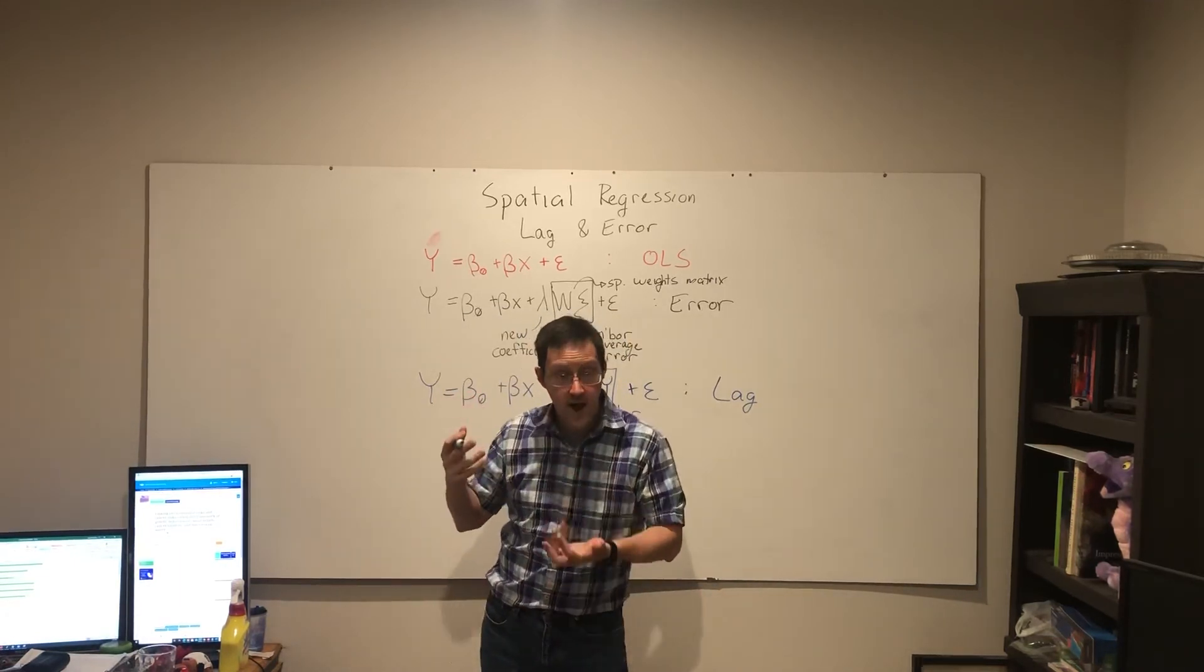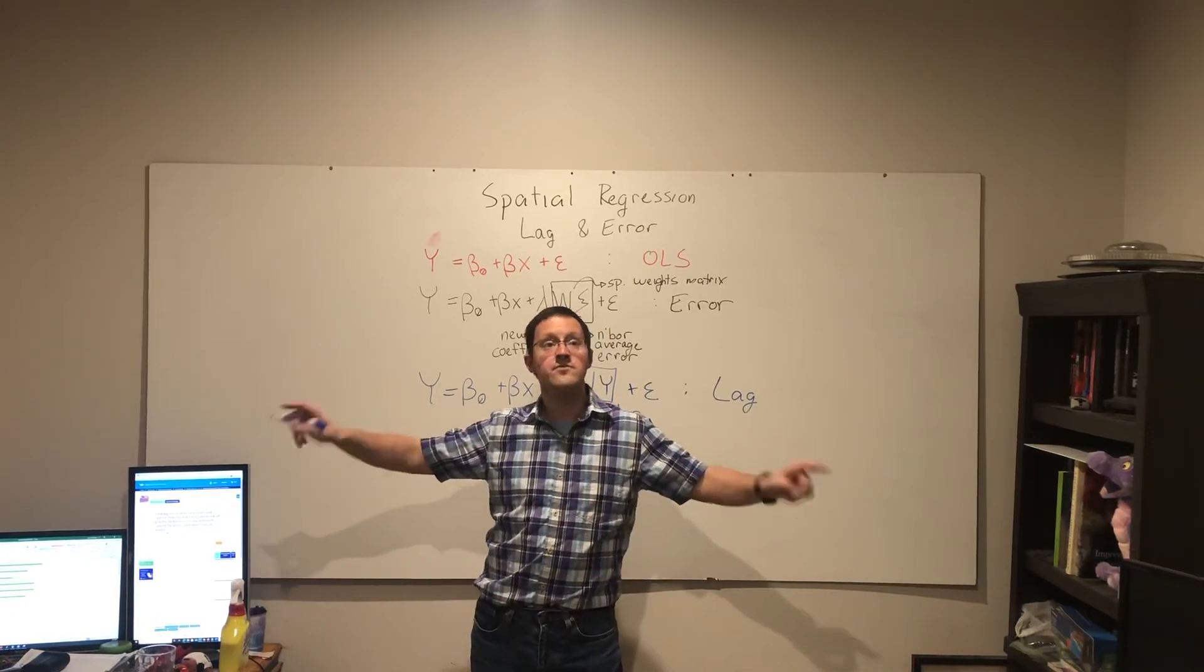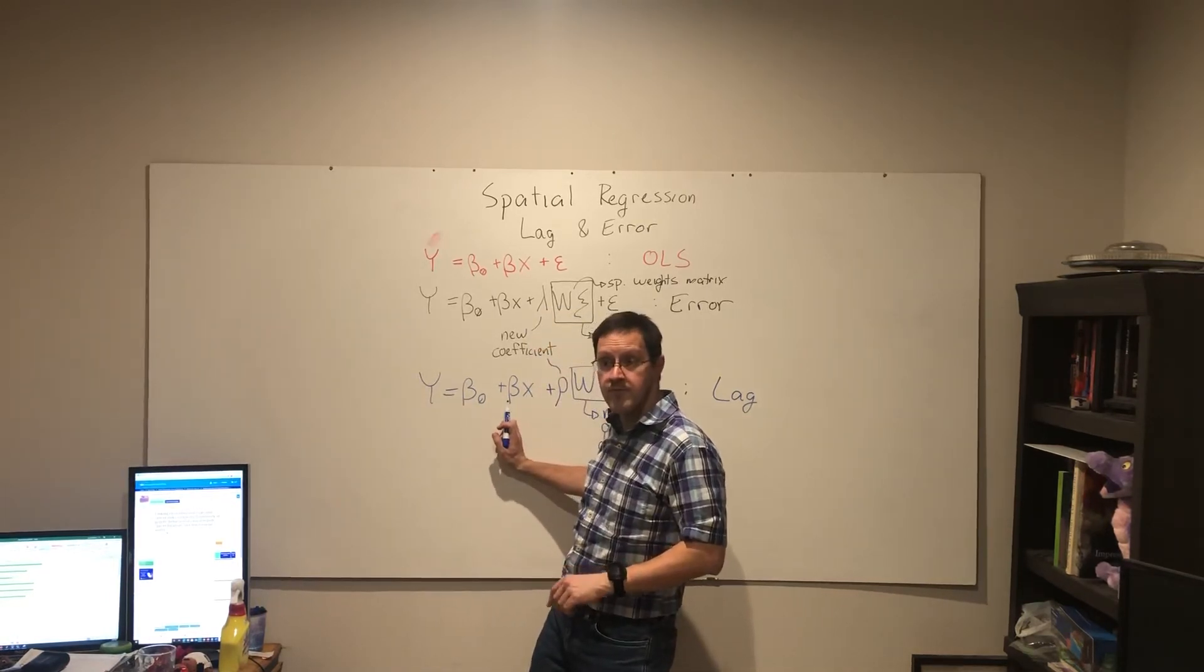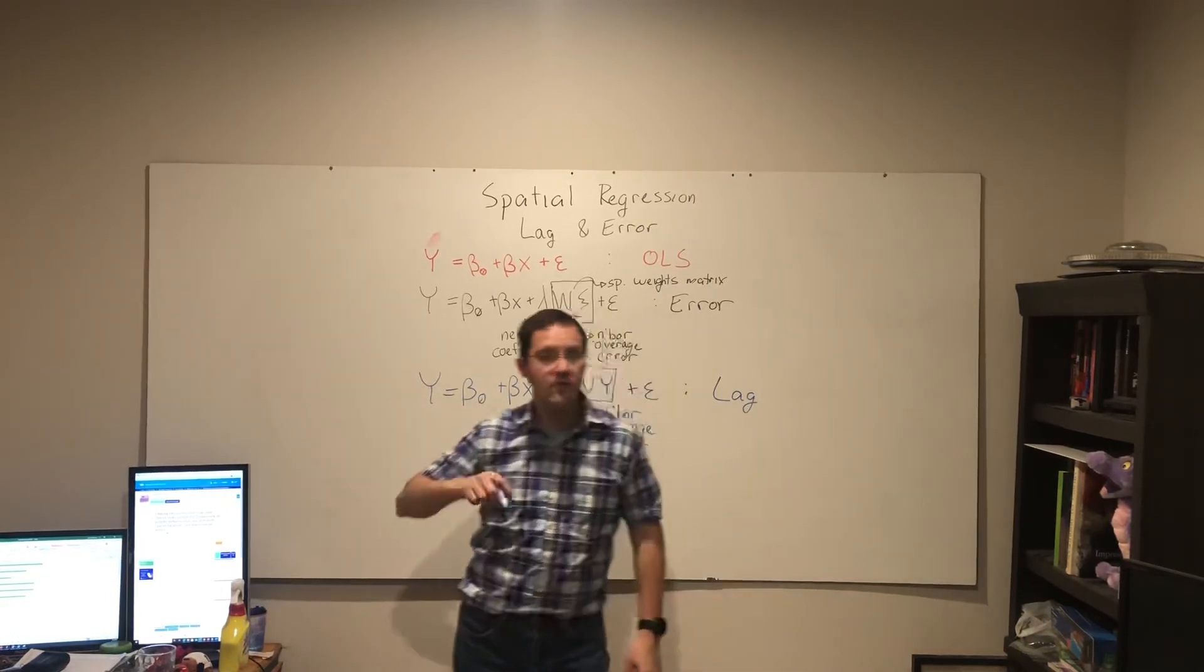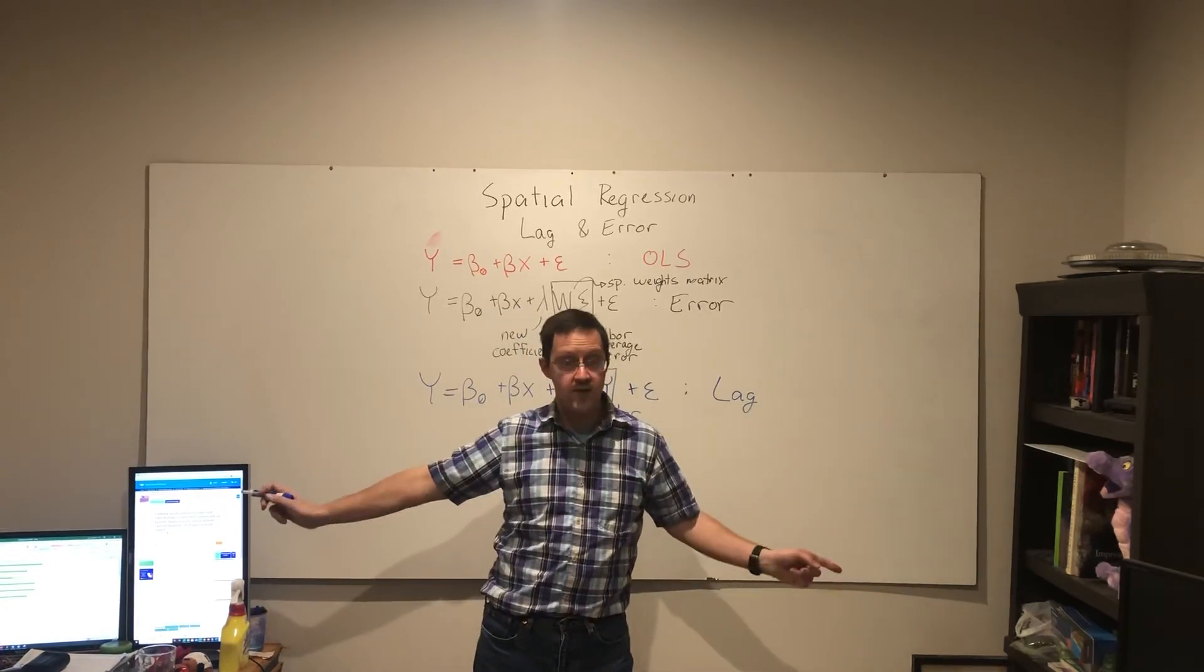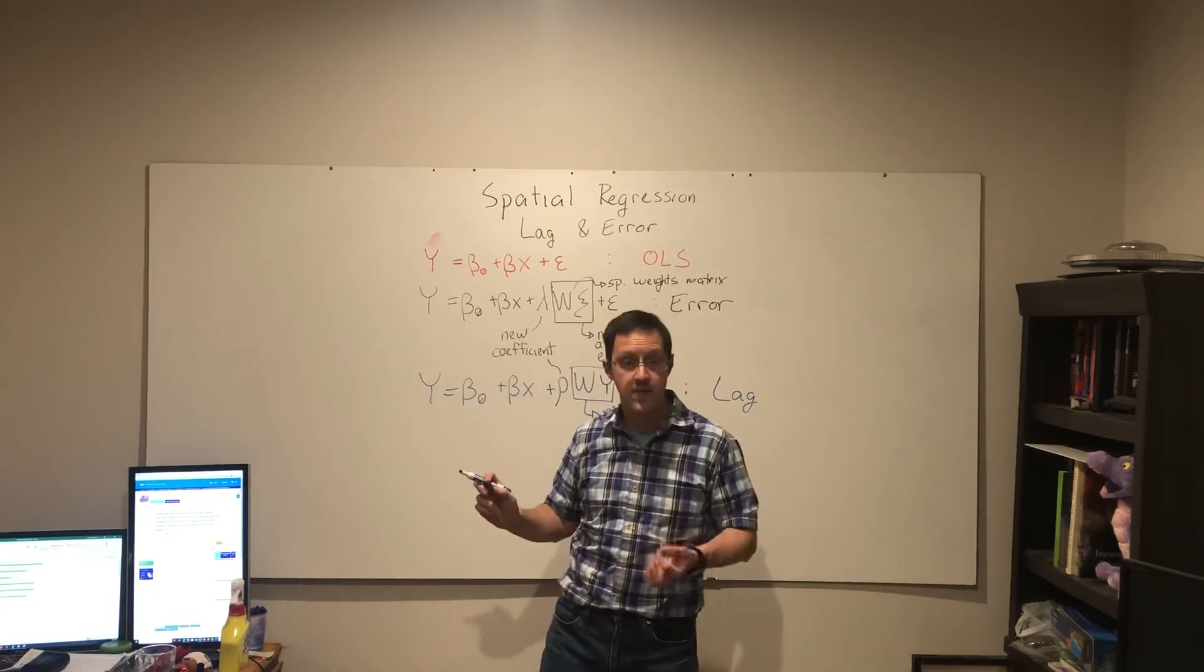A high rate here is directly associated with the high rate in the neighbors above and beyond anything going on with the independent variable. So likewise a low value here goes along with a low value in the neighboring counties, again regardless of what's going on with the independent variable.